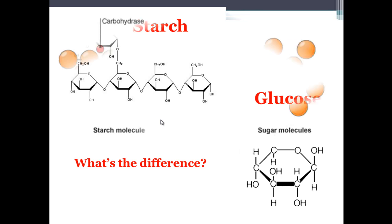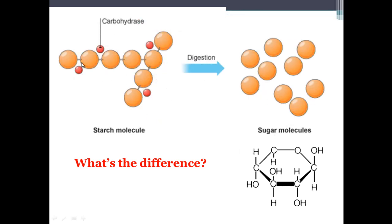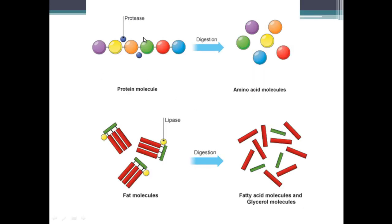Carbohydrase enzymes break the bonds holding the monomer glucose units together, leaving you with individual sugar molecules — so carbohydrases break down carbohydrates. You also have protease enzymes which break down proteins into their subunits called amino acids, and lipase enzymes which break down lipids into their subunits: fatty acids and glycerol.